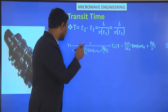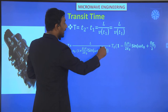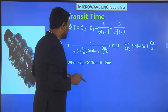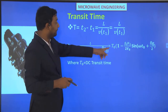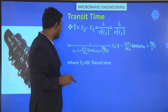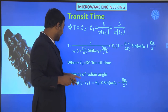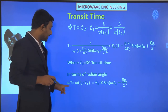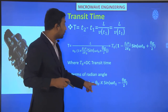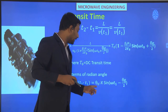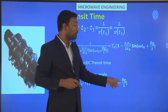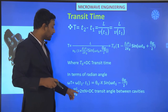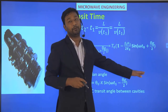Using the approximation (1 plus x)^(−1) ≈ (1 minus x), we get T0 as the DC transit time. In terms of radian angle: ω(T2 minus T1) equals θ0 minus X·sin(ωT1 plus θ_G/2), where θ0 equals ωL/V0 is the DC transit angle between cavities.